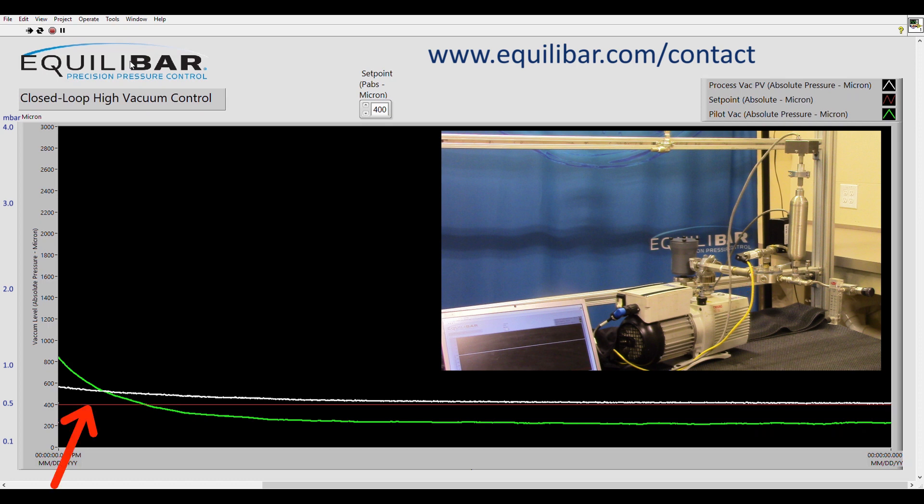The red line shows the desired set point for the absolute pressure in micron. The white line shows the actual process pressure. The green line shows the pilot pressure applied to the dome of the Aquilibar vacuum regulator.